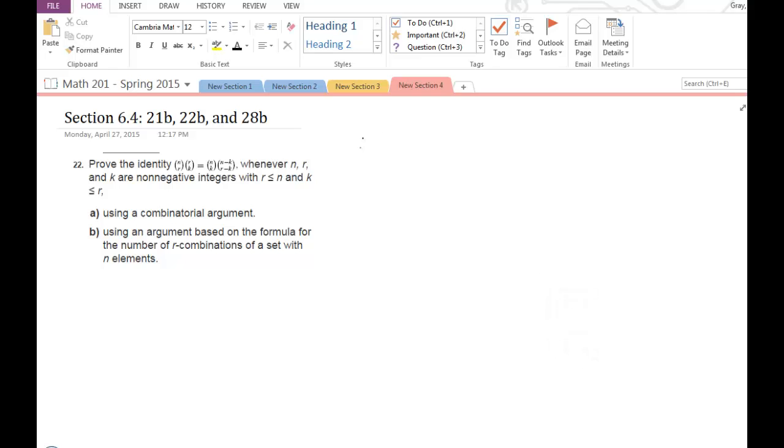So first thing, I'm just going to start with the right hand side, just to see how that looks when I apply that formula for these combinations. So I know that n choose k is just n factorial divided by k factorial times n minus k factorial.